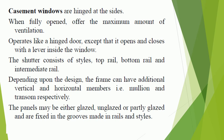Casement windows are hinged at the sides and, when fully opened, offer the maximum amount of ventilation. They operate like a hinged door, except that they open and close with a lever inside the window. The shutter consists of stiles, top rail, bottom rail, and intermediate rail. Depending upon the design, the frame can have additional vertical and horizontal members — mullions and transoms respectively.